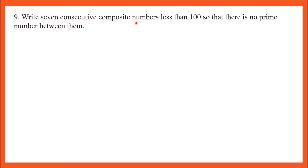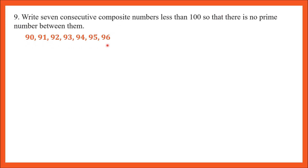Question number 9: write 7 consecutive composite numbers less than 100 so that there is no prime number between them. Consecutive numbers mean numbers that come one after another. The numbers must all be composite — divisible by some number other than themselves. The answer is 90, 91, 92, 93, 94, 95, and 96. All these numbers are divisible by some number and no prime number falls between them.